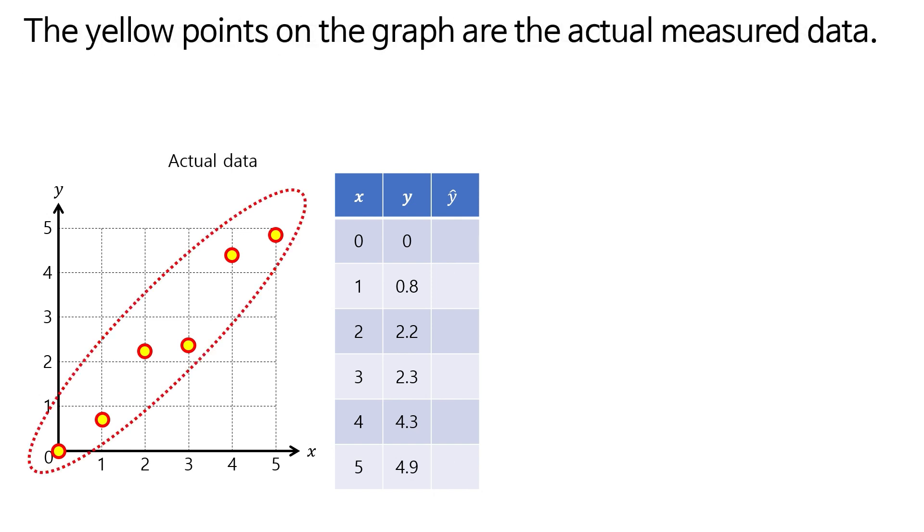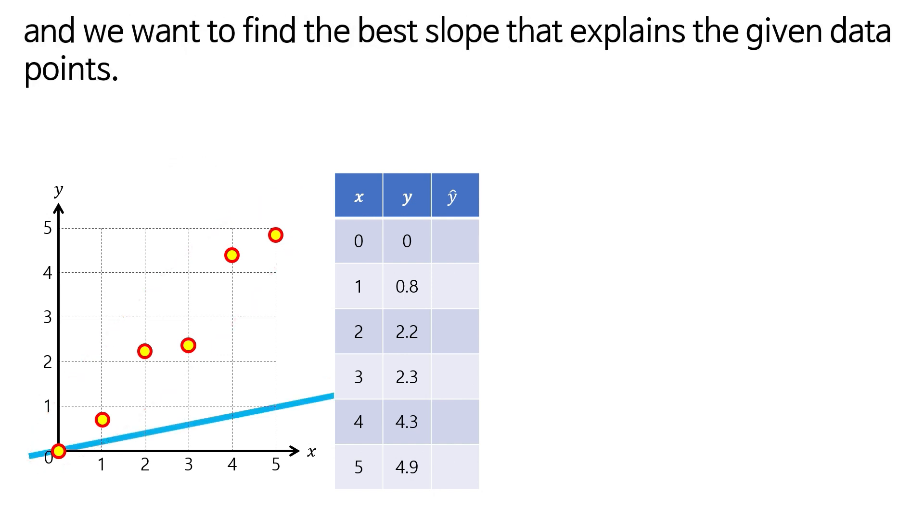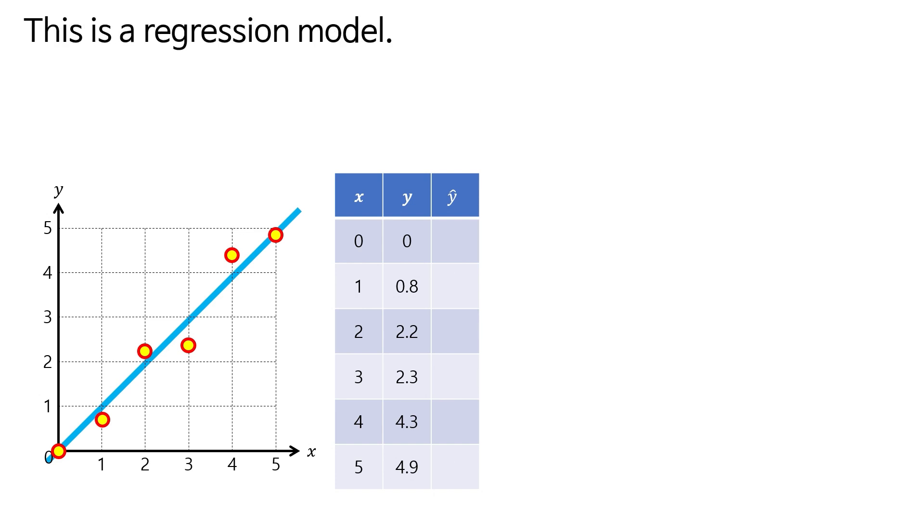The yellow points on the graph are the actual measured data. We start with an initial straight line, and we want to find the best slope that explains the given data points. This is a regression model.